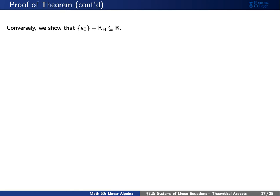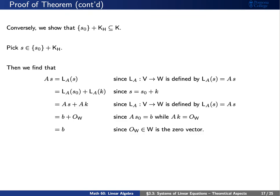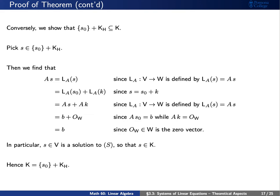For the other containment, pick s in the set s zero plus K sub H. Applying A to s gives B plus zero in W, so s is a solution to system capital S and thus s is in capital K. This gives us equality of the two sets.